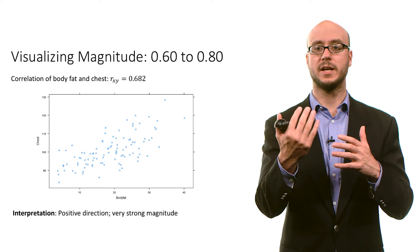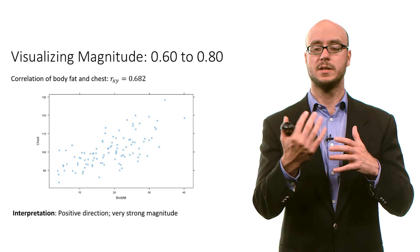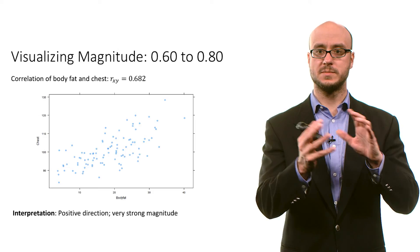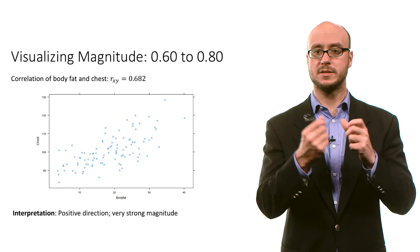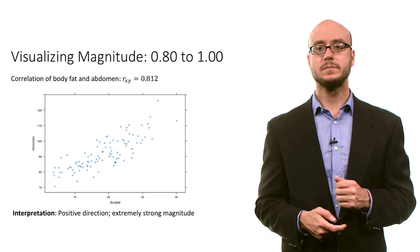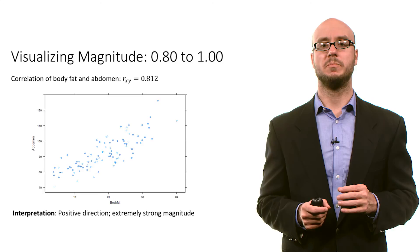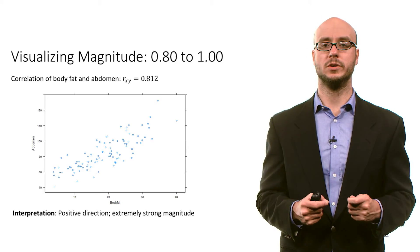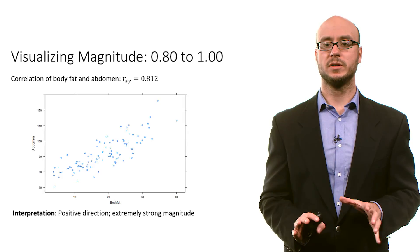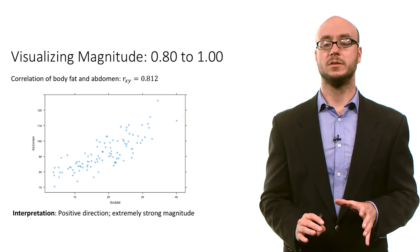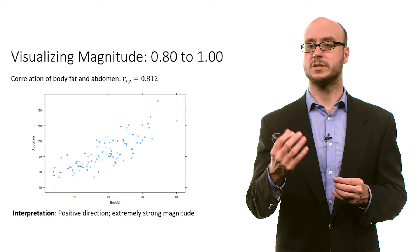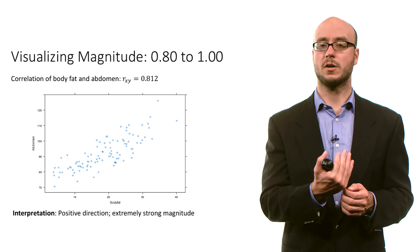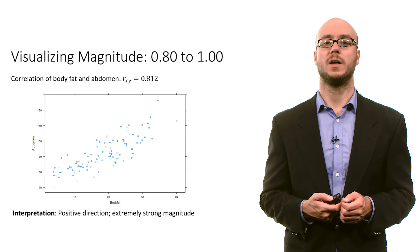You can see a greater clustering of data from the lower left to the upper right. If we look at the correlation between body fat percentage and abdomen, we get this value of 0.812. This is an extremely strong magnitude and a positive direction. And you can see that as we get closer to one, you see a stronger pattern in the scatter plot of data.